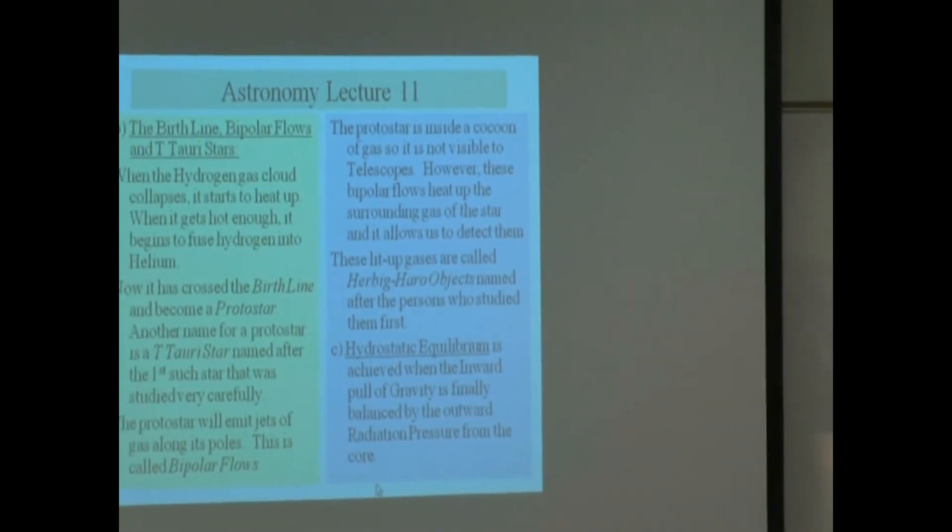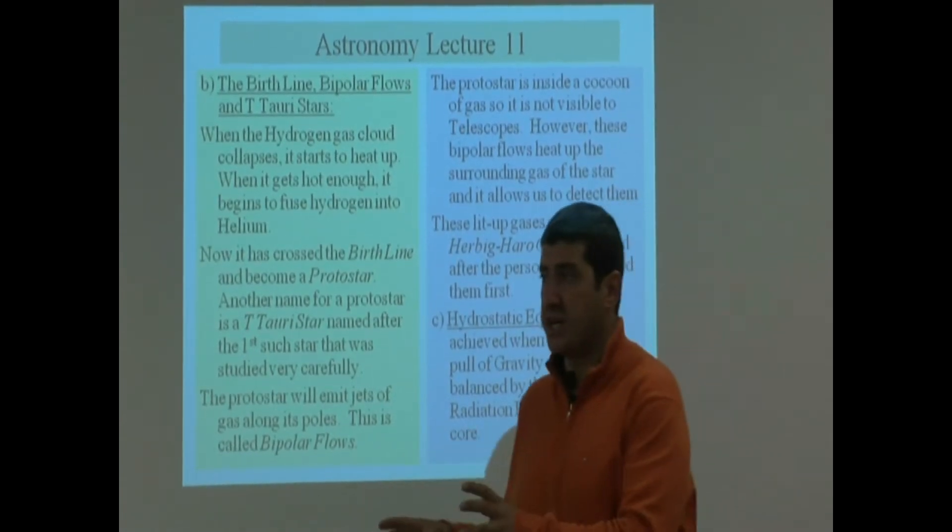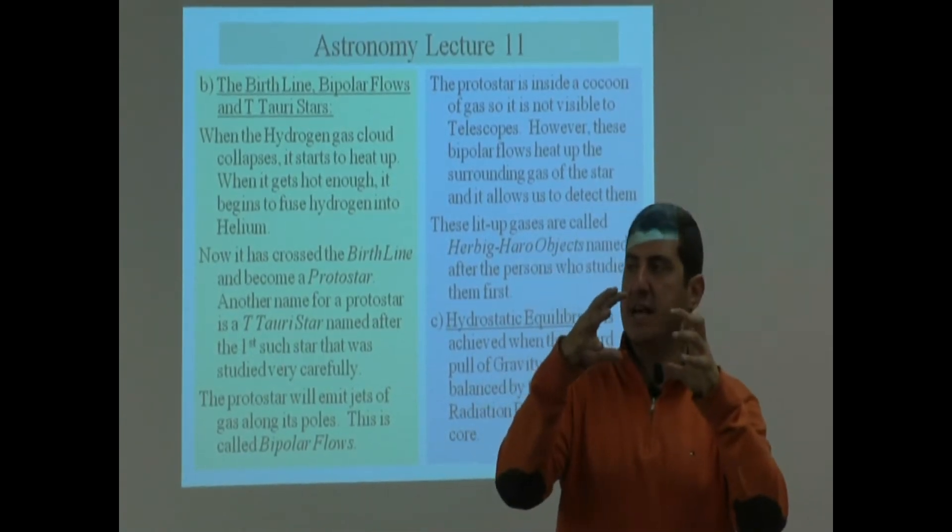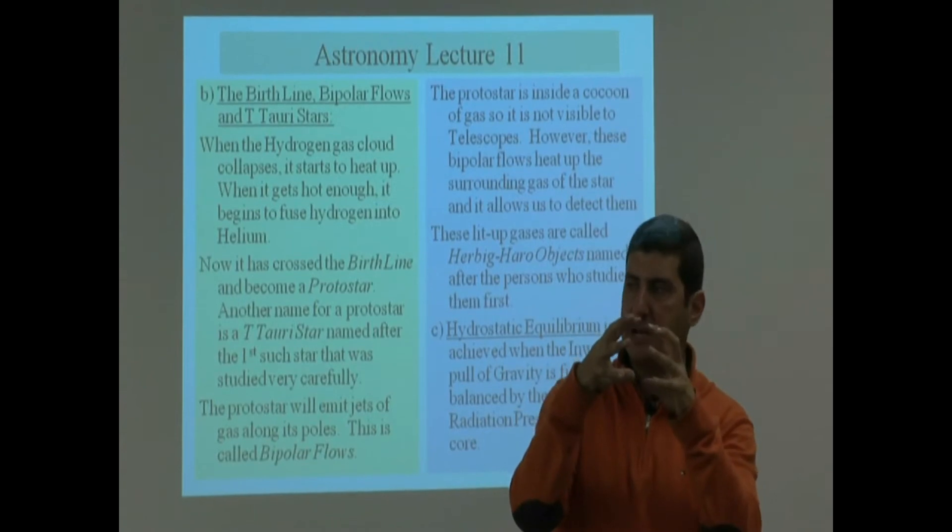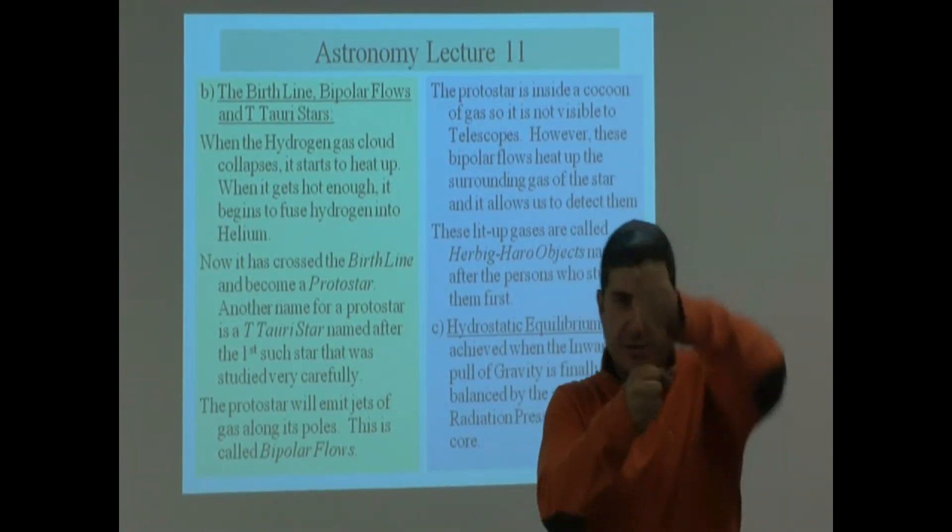Hydrostatic equilibrium. So, the one thing that makes the protostar not a main sequence star yet is because it hasn't stopped collapsing. It's still collapsing, it's still emitting jets of gas, collapsing, emitting jets of gas.